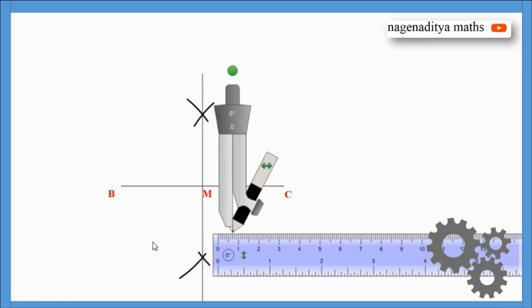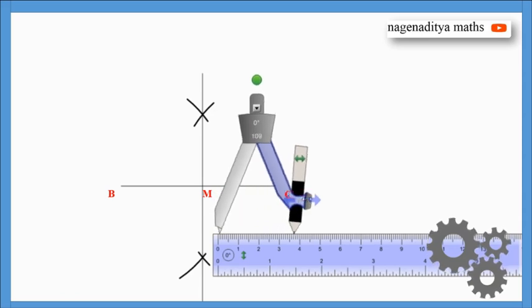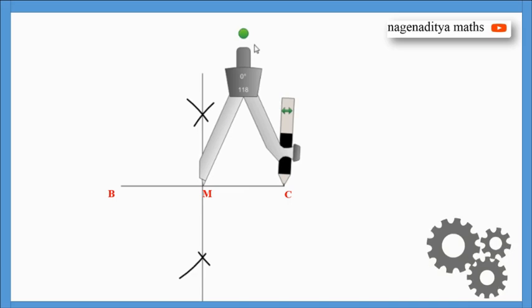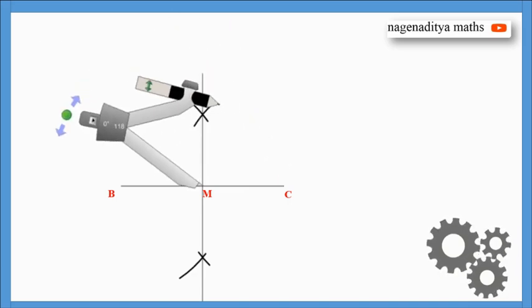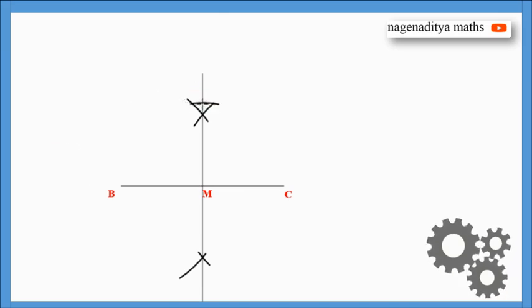By the problem, we have to draw an isosceles triangle whose altitude is 4 cm. That is why we take 4 cm radius, place the compass on point M, and draw an arc on the perpendicular bisector. Now join A, B and AC. We will get an isosceles triangle whose altitude is 4 cm.